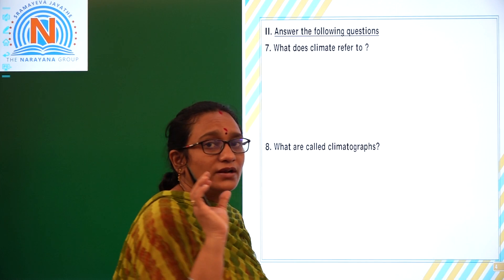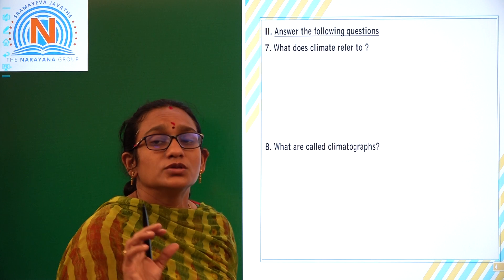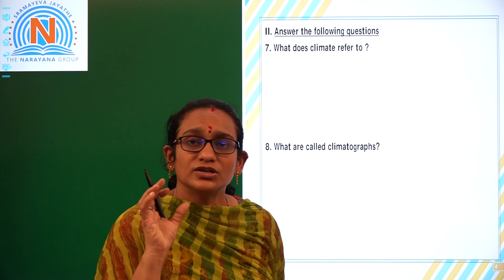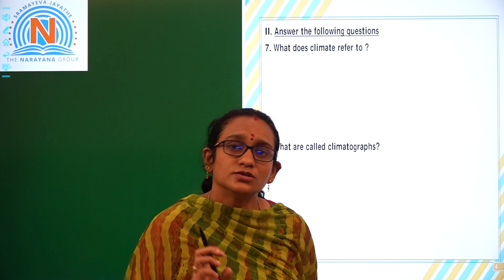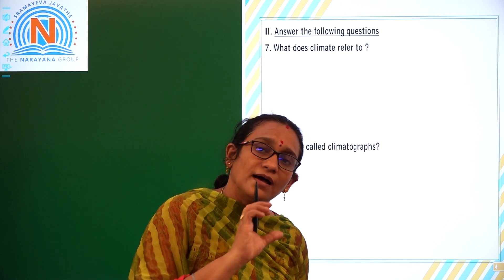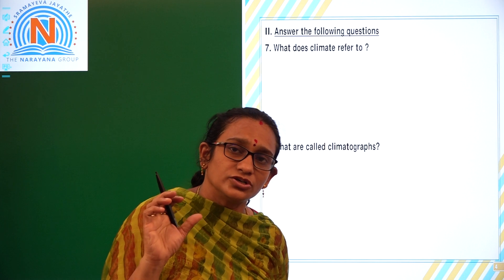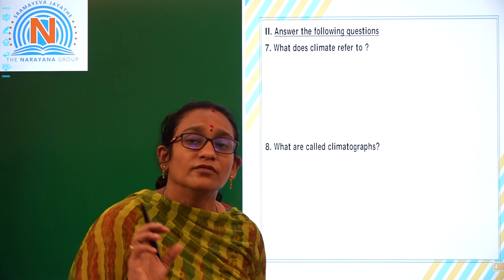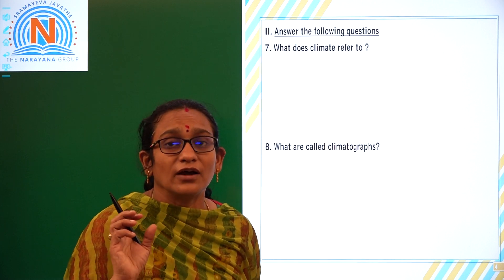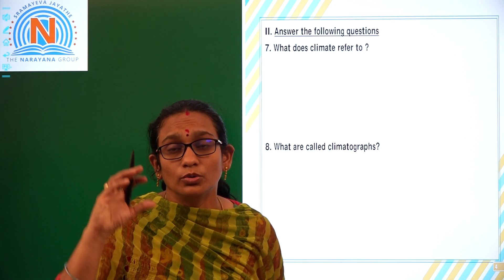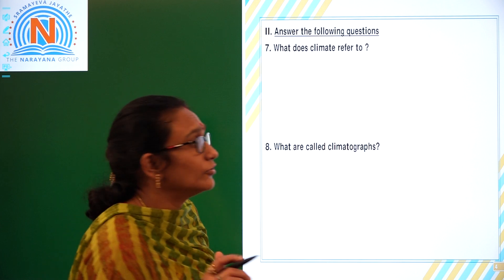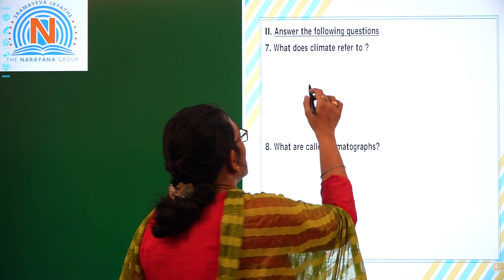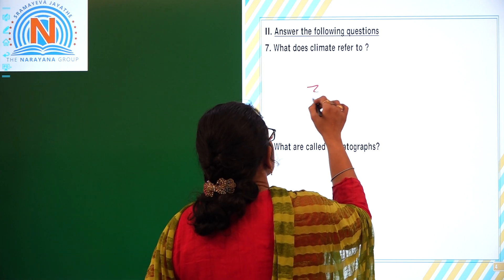What does climate refer to? Climate refers to the average weather conditions of a place. When we take the average weather conditions of a place, in order to consider the climate of the place, we have to take a minimum of 30 years.